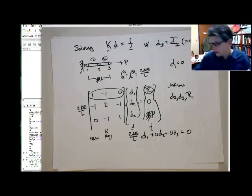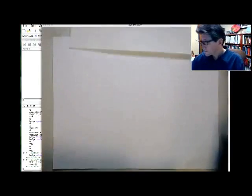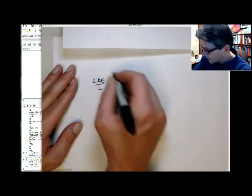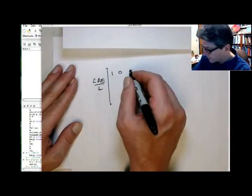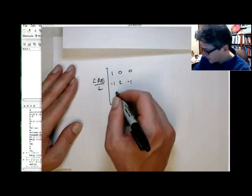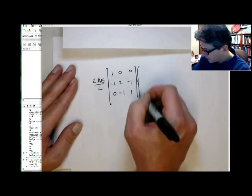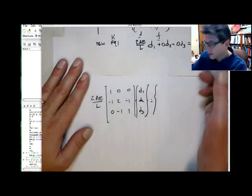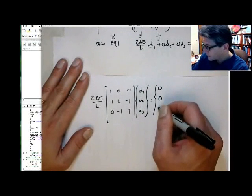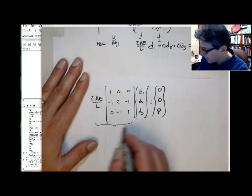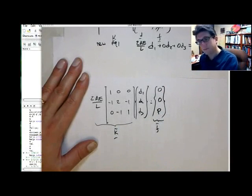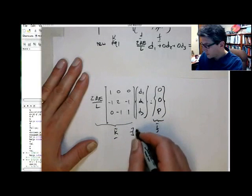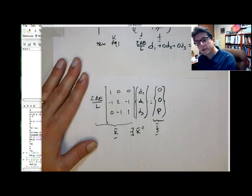So this then gives me the following modified stiffness matrix. So now I get the following system: 2AE over L times [1, 0, 0; -1, 2, -1; 0, -1, 1] times [D1; D2; D3], and now the right-hand side for this equation is 0, so we have to put the 0 here, don't keep the R1. The other two equations remain the same. So this is now our modified stiffness matrix and this is our modified force. This is now no longer singular, so the inverse of that matrix exists.